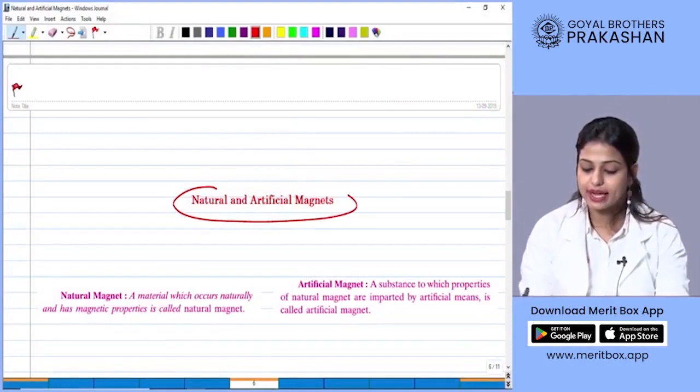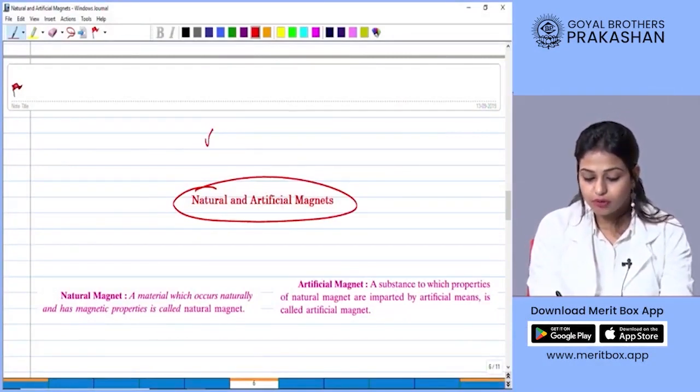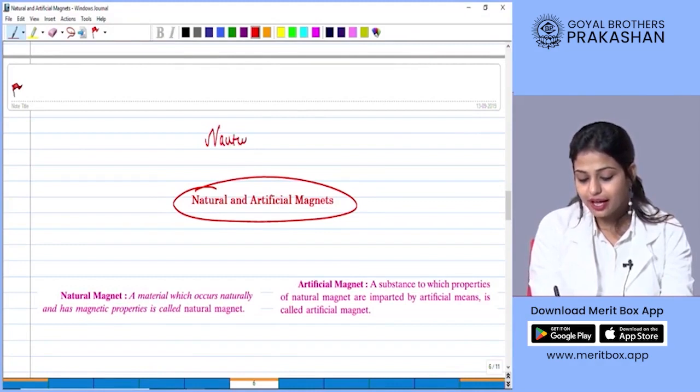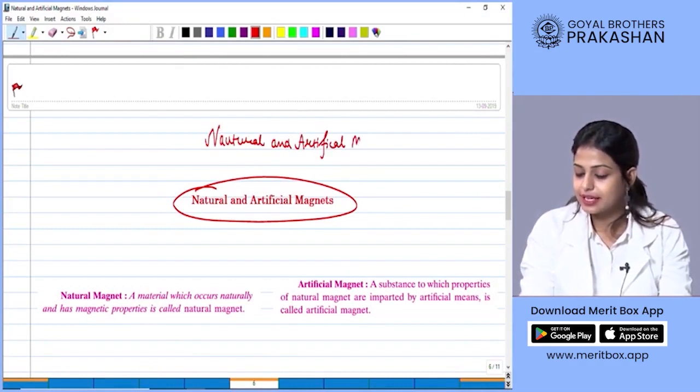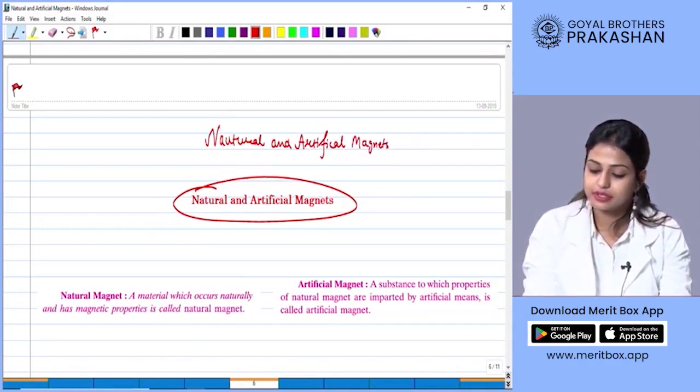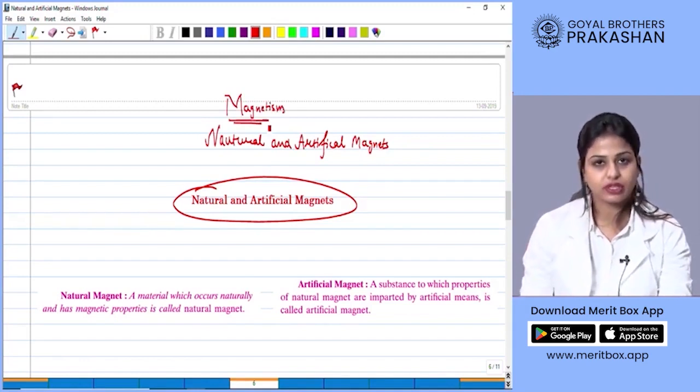Hello students, welcome to the physics session. Today we are going to do the topic of natural and artificial magnets that fall under the unit of natural and artificial magnets under the theme of magnetism. Okay students, so let's begin with this.